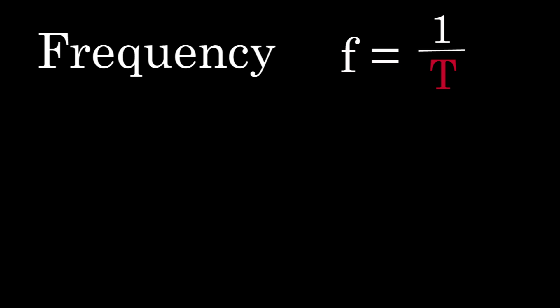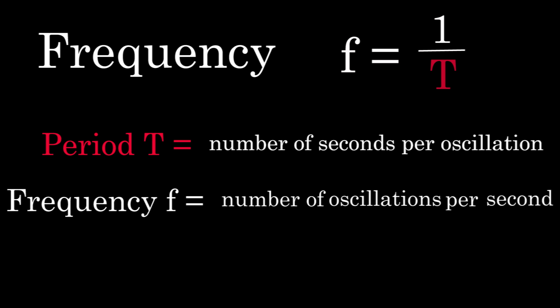An idea intimately related to the period is called the frequency. Frequency is defined to be one over the period. So since the period is the number of seconds per oscillation, the frequency is the number of oscillations per second. Frequency has units of one over seconds, and we call one over a second a hertz.